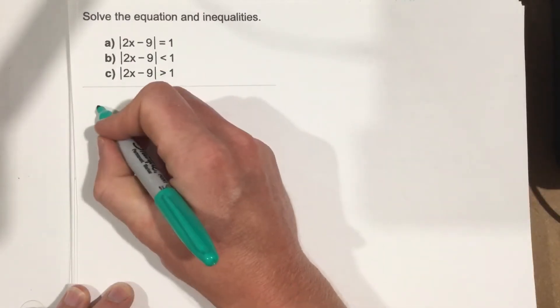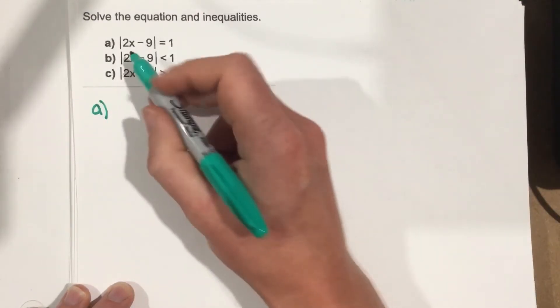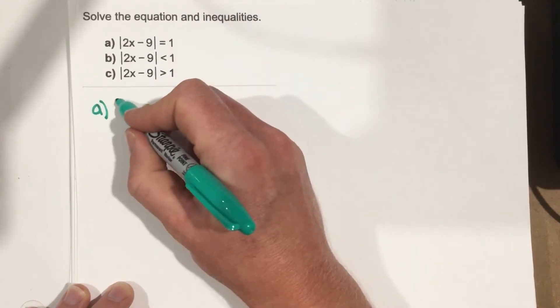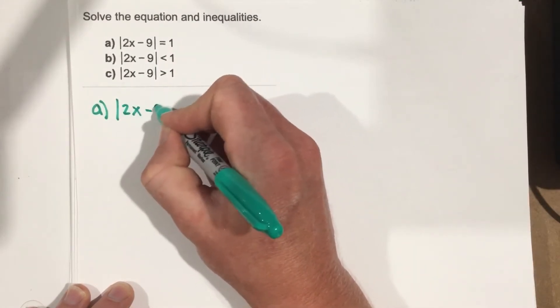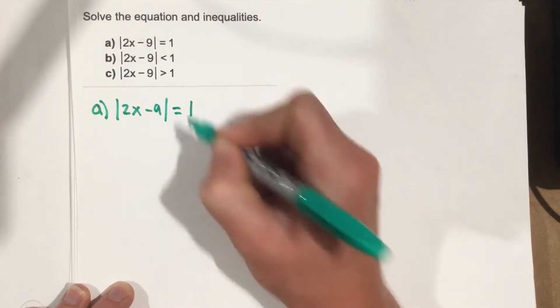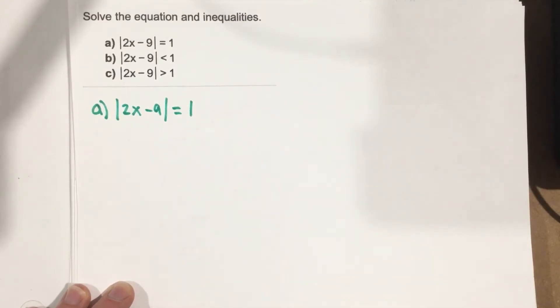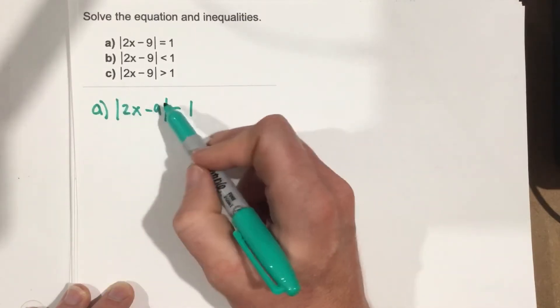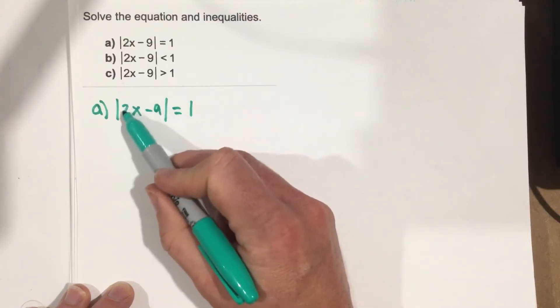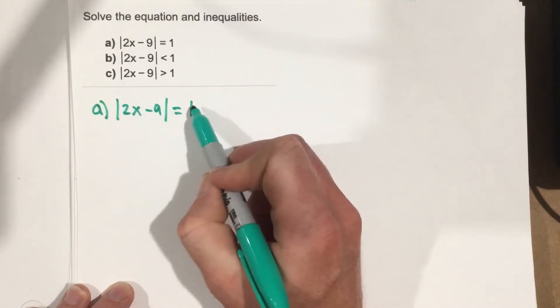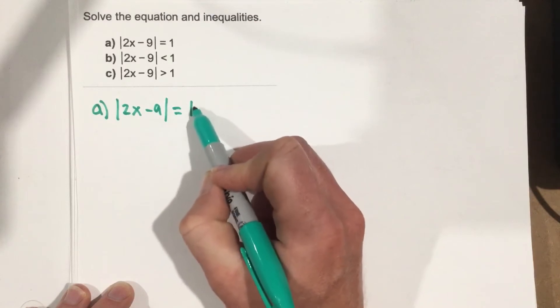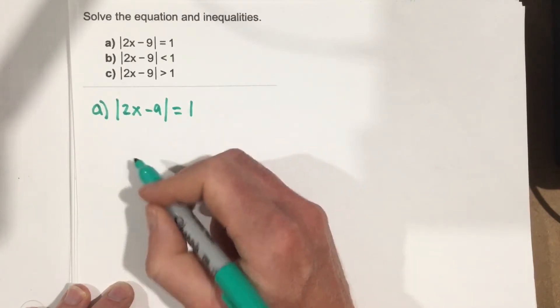Go straight along here. We'll start with A, which is the easier one to start with. We have absolute value of 2x minus 9 equals 1. How do we solve this? We've solved a few of these absolute value equations. We know we take what's on the inside here and we set equal to the positive version and the negative version of what's on the right side of the equation.